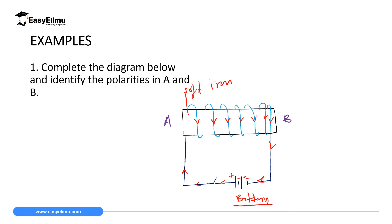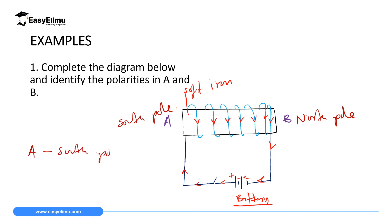To identify the polarities, grasp the solenoid such that your fingers are pointing in the direction of current — in front the fingers face down. Your thumb then points toward point B, so B is the north pole and A automatically becomes the south pole. Therefore, point A is the south pole and point B is the north pole.